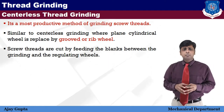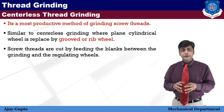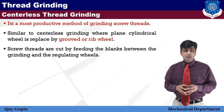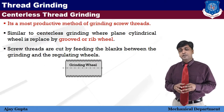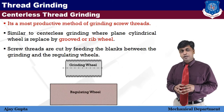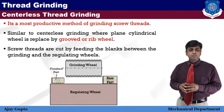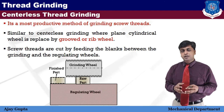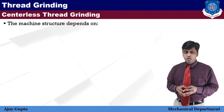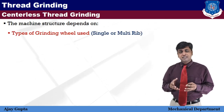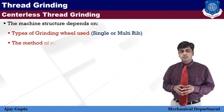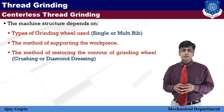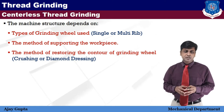Centerless thread grinding is the most productive method of grinding screw threads, using either a single rib or multi-rib wheel. This process is similar to centerless grinding where the plain cylindrical wheel is replaced by a grooved or ribbed wheel. As shown in the diagram, screw threads are cut by feeding the blank between the grinding and the regulating wheel. The machine structure depends on the type of grinding wheel used — single or multi-rib — the method of supporting the workpiece, and the method of restoring the contour of the grinding wheel, such as crushing or diamond dressing.